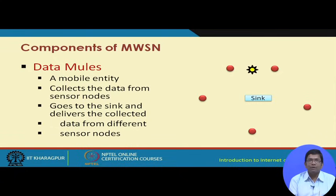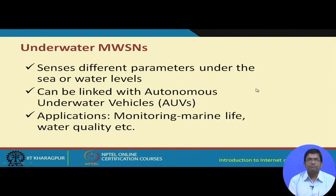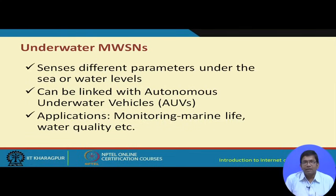We can also have data mules, which are mobile external entities that collect data from the sensor nodes, then go to the sink and deliver the collected data. The mule goes in close proximity to each sensor node, collects data, then comes in proximity of the sink node and delivers all the messages to it.